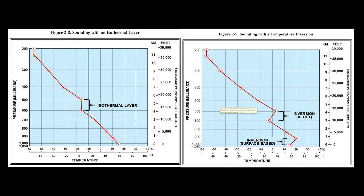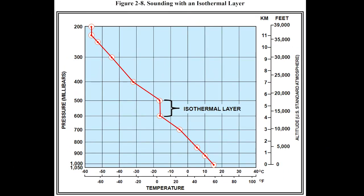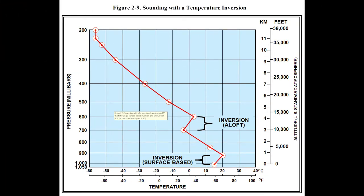The actual temperature change with altitude can vary a lot depending on local conditions. Figures 2-8 and 2-9 show different ways temperature can vary with altitude. An isothermal layer is where temperature stays the same as you go up — 'iso' meaning same. A temperature inversion is where temperature actually goes up as you move up in altitude. The average lapse rate is not necessarily what you'll measure at any given location.